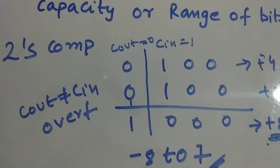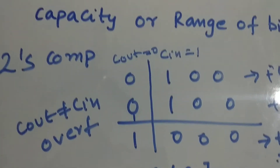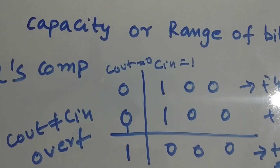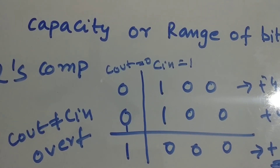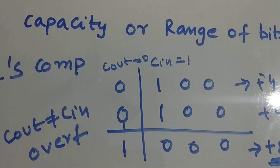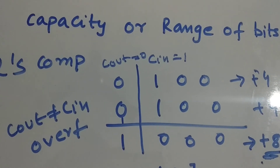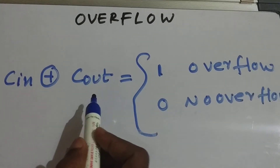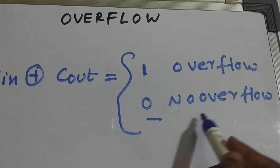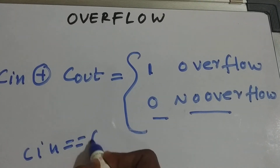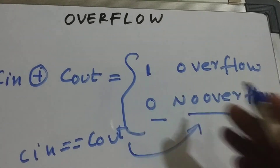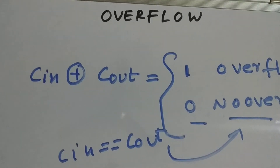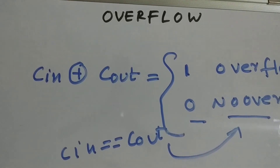Remember C_in and C_out — they are the most important things for calculating the overflow condition. The key result is: C_in XOR C_out. If that gives one, it's an overflow; if it gives zero, it's not an overflow. Whenever C_in equals C_out, there is no overflow. When C_in and C_out are not equal, it is an overflow.